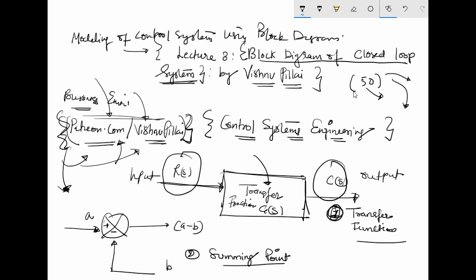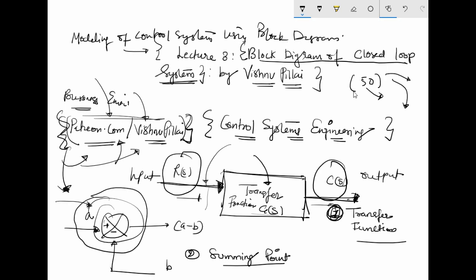Both input and output will be considered as signals when you are drawing the block diagram. The model will work whether you have a speed control system or any control system — these will be electrical signals that can be measured at the input and the output. The other important component is the summing point, which can be used to add or subtract two or more signals.